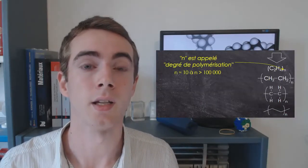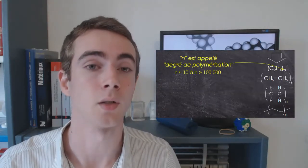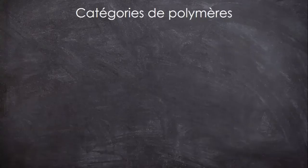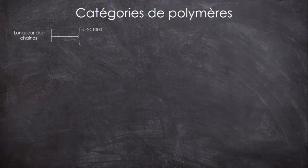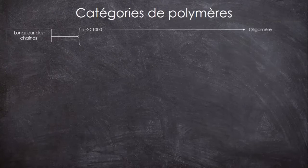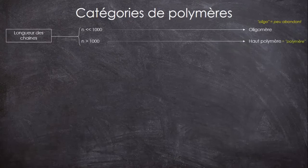Voilà donc les quatre grandes familles de polymères. Outre ce classement selon la structure et l'organisation des chaînes, il existe moult appellations applicables aux polymères selon d'autres paramètres. Par exemple, vous vous souvenez du petit indice n dans la représentation des polymères, qui indique le nombre d'unités monomères qui constituent une chaîne, et donc au final sa longueur ? Si cet indice n est inférieur à quelques centaines, on va parler d'oligomères, oligo voulant dire peu abondants. Au-delà, on parle officiellement de haut polymère, mais par habitude on emploiera simplement le terme polymère.